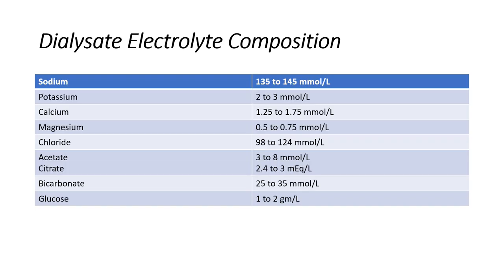The usual dialysate electrolyte composition is shown in this slide. Sodium usually ranges in dialysate from 135 to 145 millimole per liter. Potassium is 2 to 3 millimole per liter, although potassium-free dialysate is also available. Depending on the patient's condition you may select the potassium concentration, and the same applies to calcium. The usual calcium concentration is 1.25 to 1.75 millimole per liter.